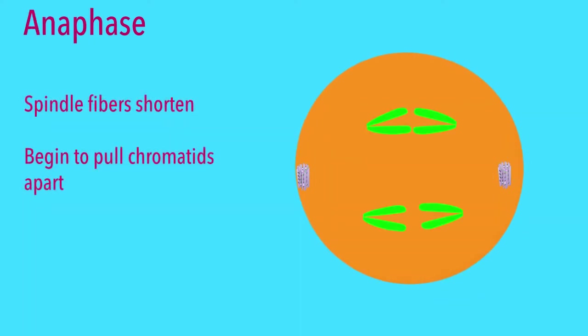In anaphase, the spindle fibers shorten and begin to pull the sister chromatids apart, moving them to opposite poles.